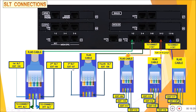The second port will be used to connect extensions 107 and 108 using the same pairs. The remaining three RJ45 ports will give four extensions per port, which means all pairs will be used. The orange-white pair connects extension 109, and the green-white pair connects extension 111.